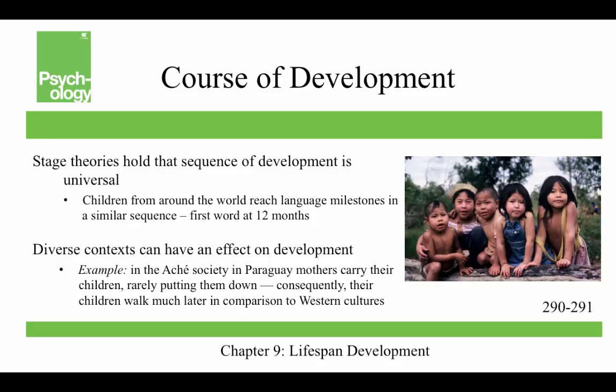Stage theories hold that the sequence of development is universal — children from around the world reach language milestones in a similar sequence, with most kids speaking their first words at 12 months. But diverse contexts can also affect development. In the Ache Society in Paraguay, mothers carry their children and rarely put them down, so their children walk at about 24 months, compared to about 12 months for children in western countries.